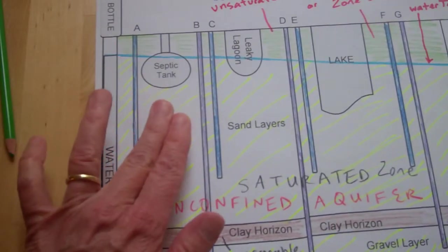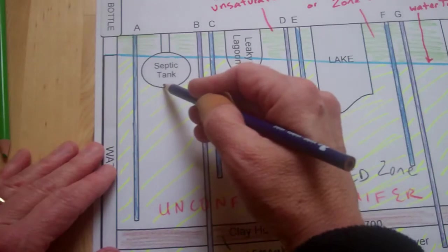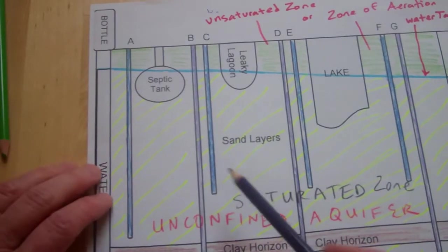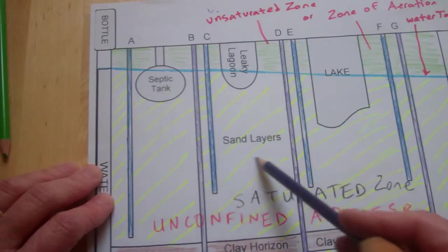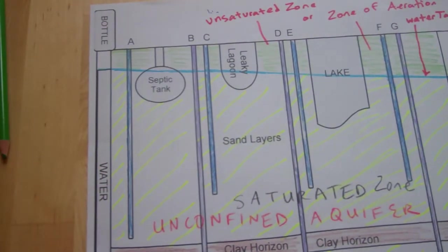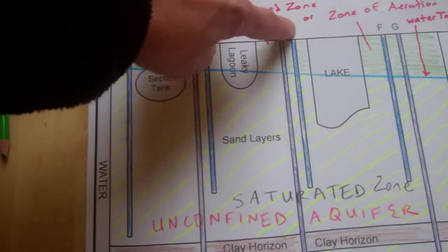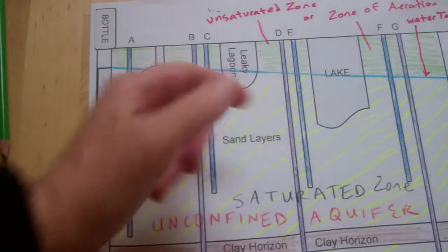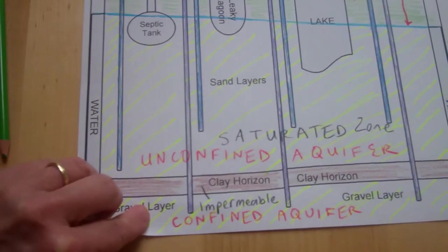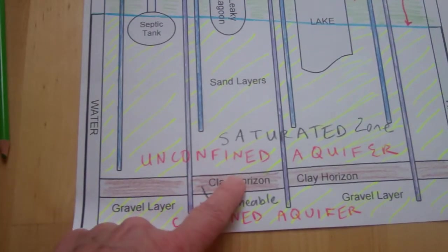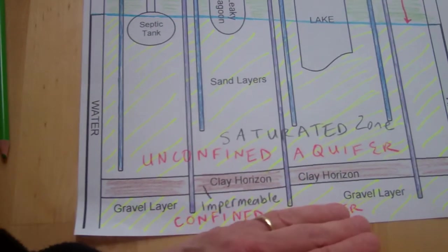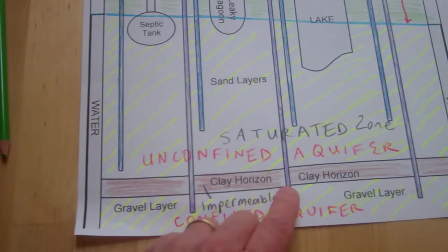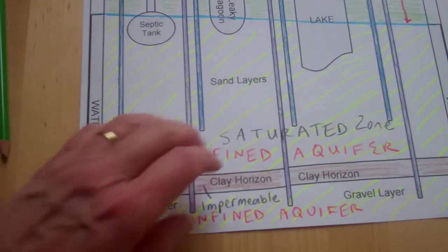What if the septic tank leaked? Its waste would travel in the direction of flow, so wells C, E, and F would be contaminated. What about B, D, and G? Even though they're in the path, the bottom of their pipes reaches below the clay horizon into the confined aquifer. The impermeable clay layer keeps that water separate, so B, D, and G would have safe drinking water.